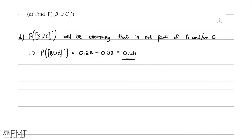P((B∪C)') = 0.22 + 0.22 = 0.44. There were two marks available: one for the correct method of adding 0.22 and 0.22 from the diagram, and a second for the correct answer of 0.44.